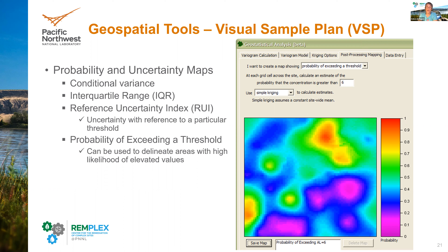Theoretically you can get a correlation structure that looks like an amoeba, but realistically the least complicated kriging model that incorporates anisotropy would be an ellipse. You can identify two or three directions where the correlation structure in the data is different from the others. For instance, if you know the groundwater flow direction, you can use that as the long axis of an ellipse, and then use the short axis as something perpendicular to groundwater flow.